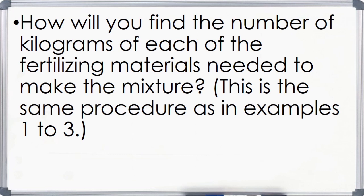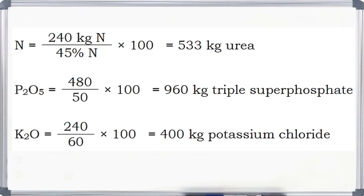How will you find the number of kilograms of each fertilizer material needed to make the mixture? This is the same procedure as in examples 1 to 3. For nitrogen: 240 kg divided by 45% times 100. The result is 533 kg of urea. For phosphorus: 480 divided by 50 times 100. The result is 960 kg of triple super phosphate. For potassium: 240 divided by 60 times 100, equivalent to 400 kg of potassium chloride.